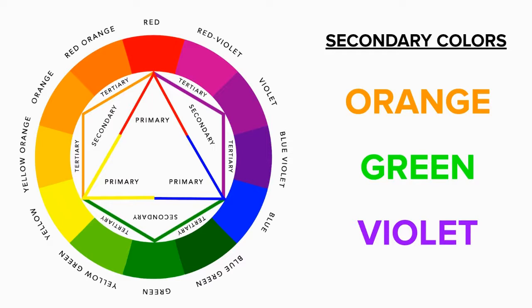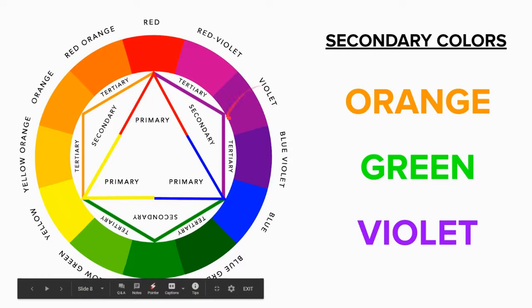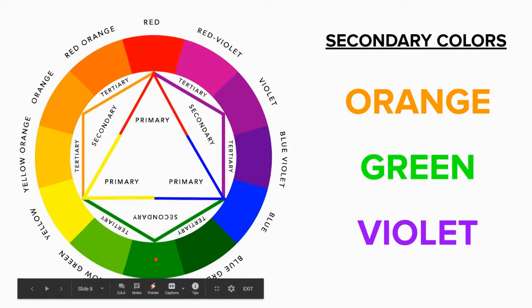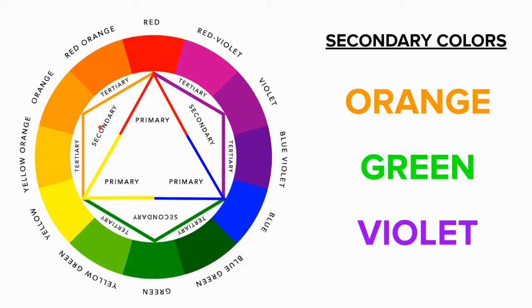The nice thing about the color wheel is how well it is organized. Let's take the color violet, for example. In order to make this secondary color, we need to combine two equal amounts of the primaries. If we combine red and blue, we create violet, which is why violet is placed equally between red and blue on the color wheel. The same is true for green, created by mixing blue and yellow, and orange, which is created by mixing equal amounts of yellow and red — each placed directly between those two primaries.